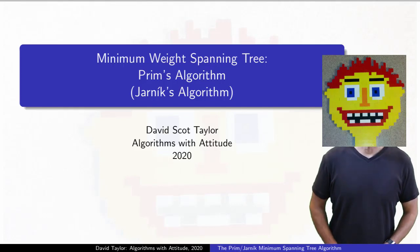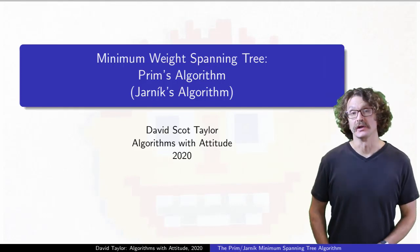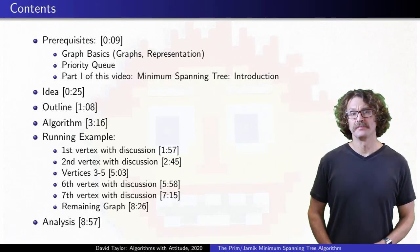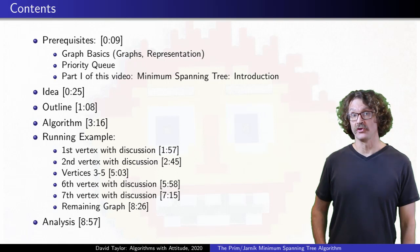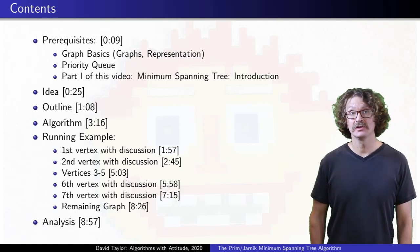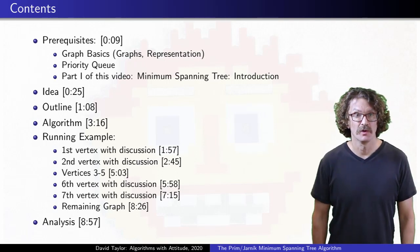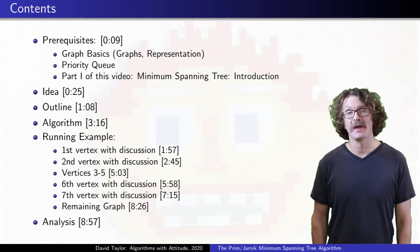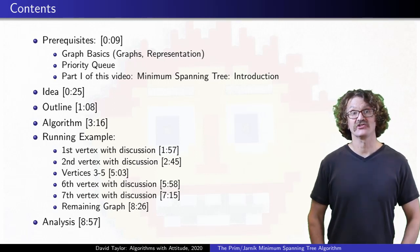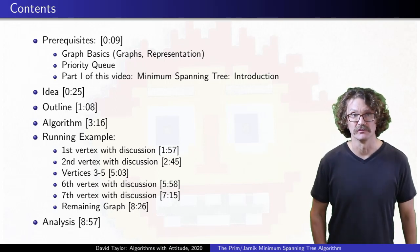This video is on Prim's minimum spanning tree algorithm, discovered by Jarnik in 1930. Few other people discovered it too. To understand it, you should know what graphs are and how they are represented, and you should know some kind of priority queue. Most importantly, this video relies on the introduction to spanning trees video. They are like a single video with an intermission, and intermissions over.